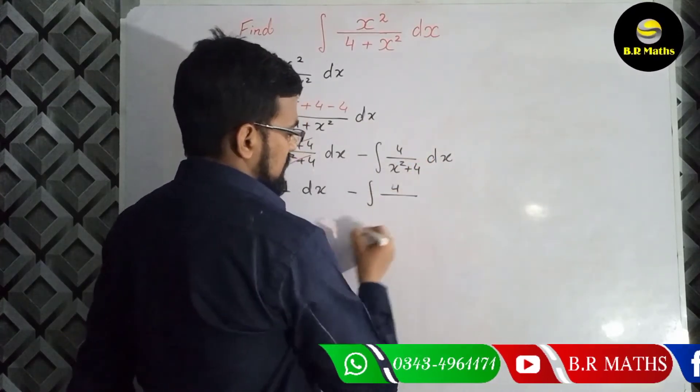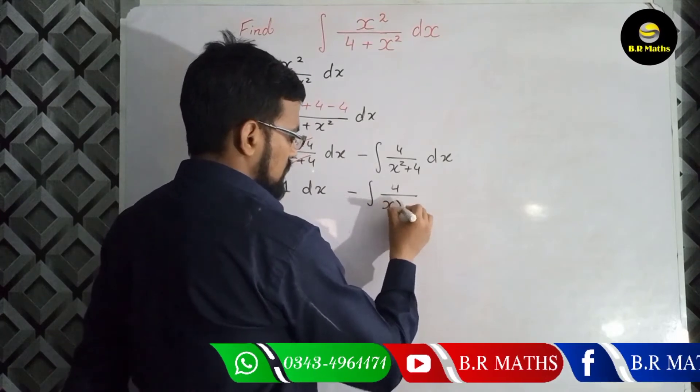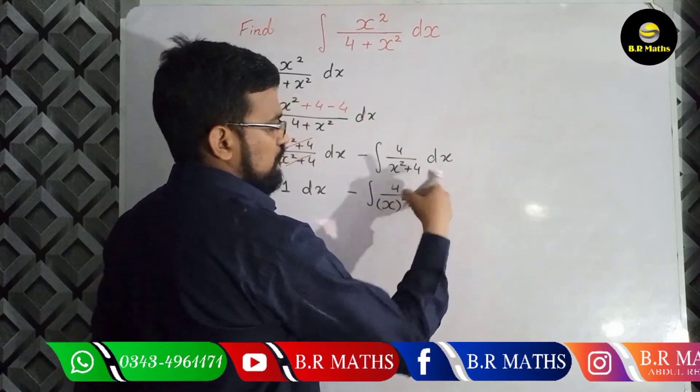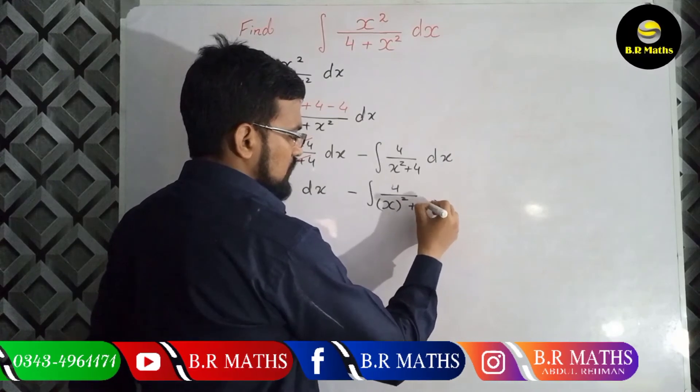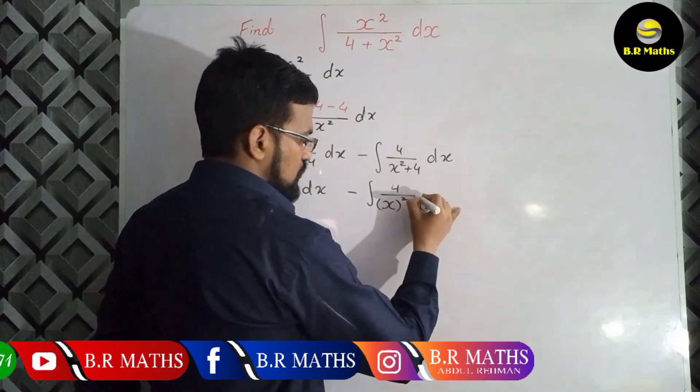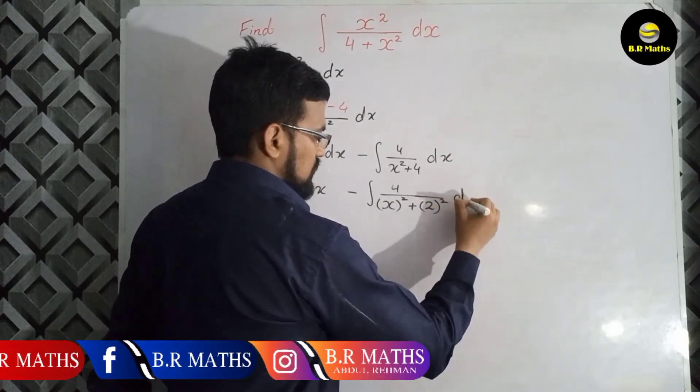4 divided by x square plus 4 is equal to 2 square, okay?